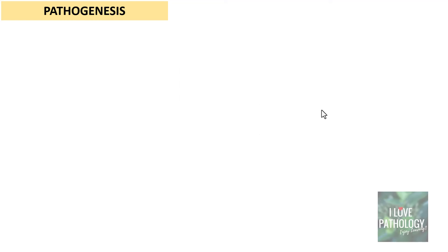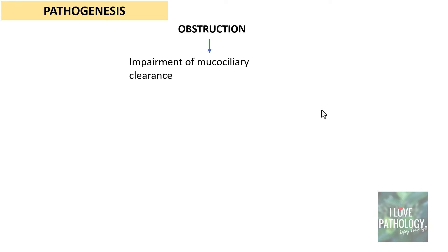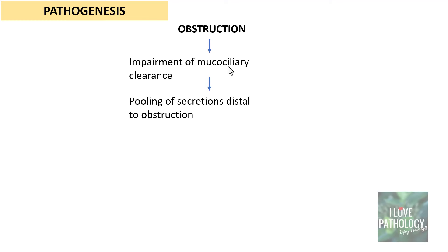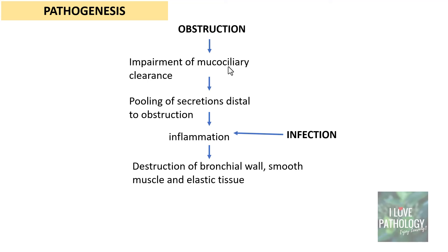Now, what is the pathogenesis of bronchiectasis? The two most common factors are obstruction and infection. When there is an obstruction, it leads to impairment of mucociliary clearance, resulting in pooling of secretions distal to the obstruction, which further leads to the development of inflammation. This inflammation can also be due to viral, bacterial, or fungal infections. When there is inflammation, it leads to destruction of the bronchial wall, particularly the smooth muscle and the elastic tissue.